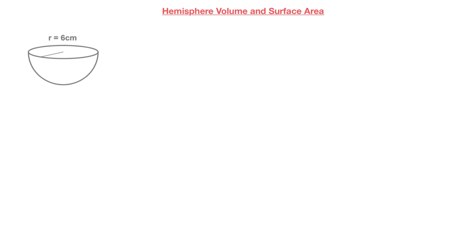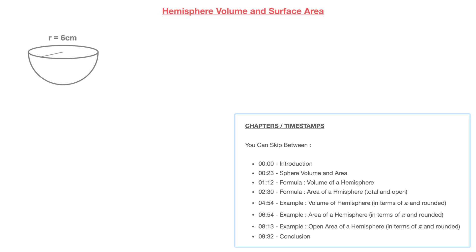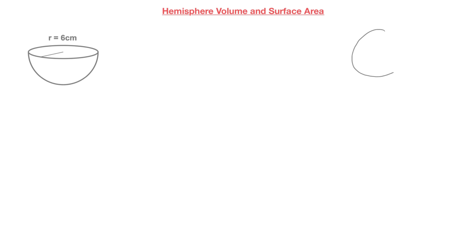Let's see how to calculate the volume as well as the surface area of a hemisphere. As you can see on the screen here, I have an example of a hemisphere whose volume and surface area we'll be calculating in just a couple of minutes. The first thing we'll do is use our knowledge of the volume as well as the surface area of a sphere to figure out the formula that we'll need for a hemisphere.